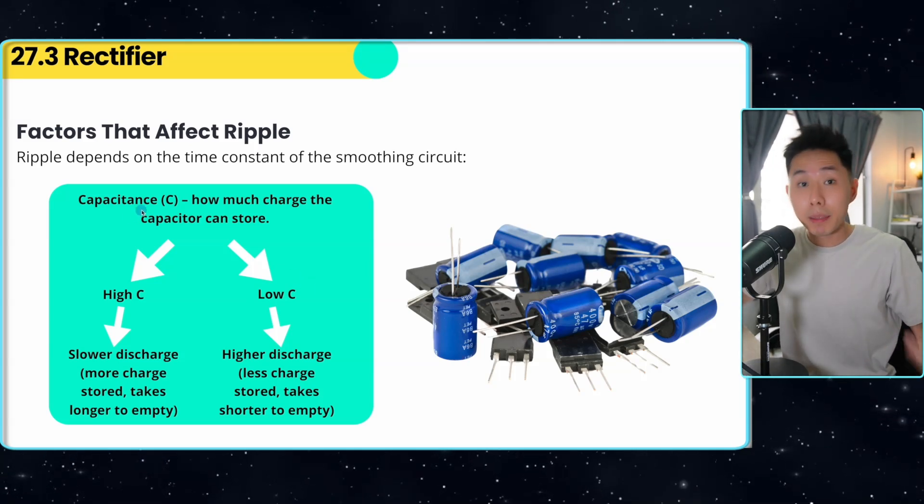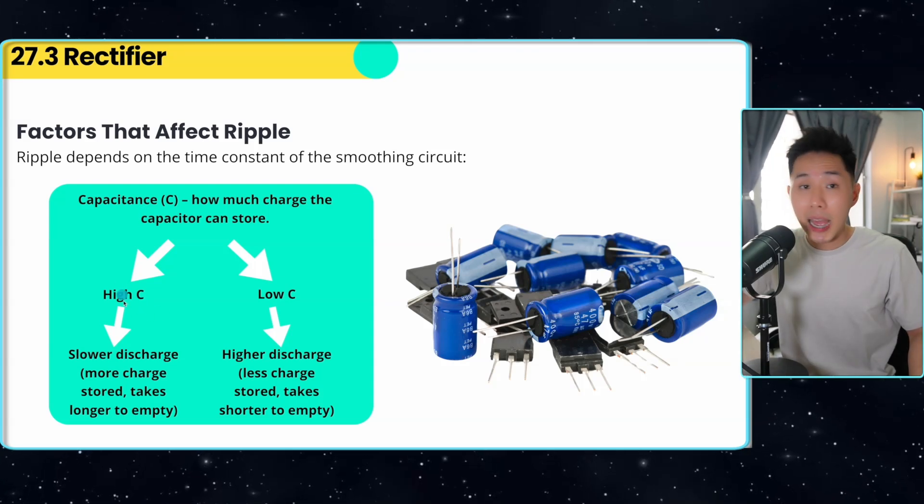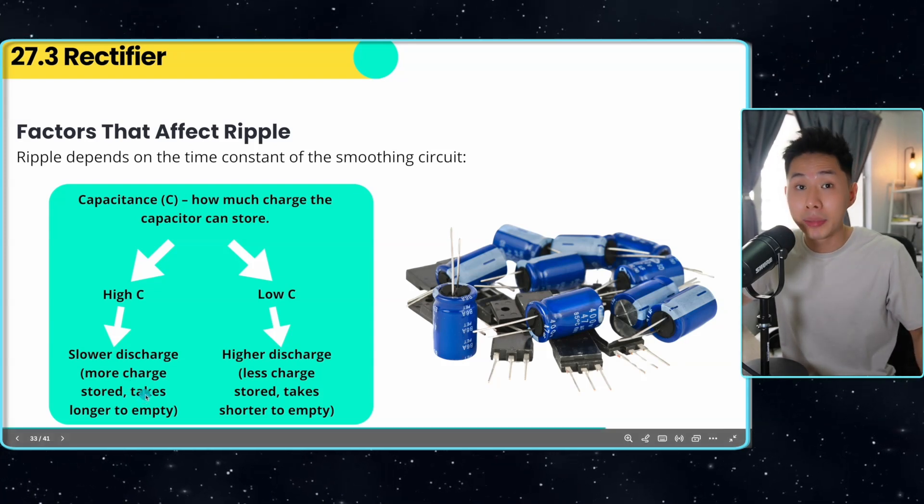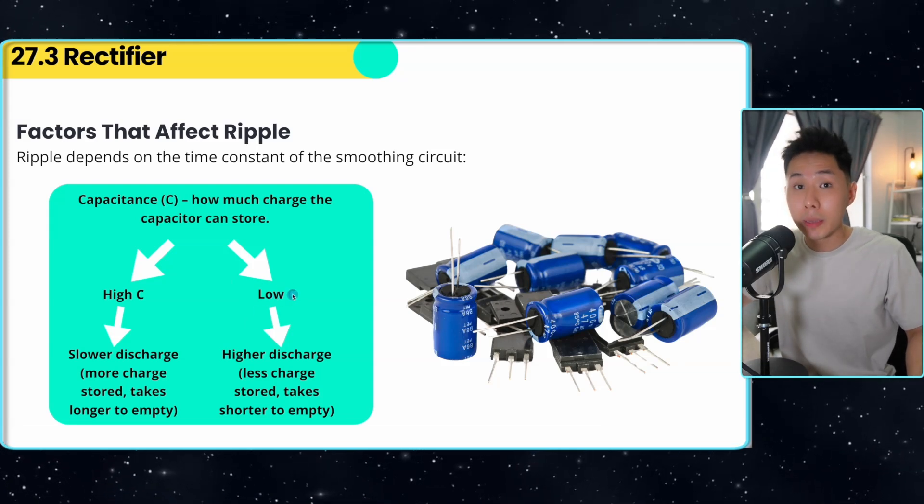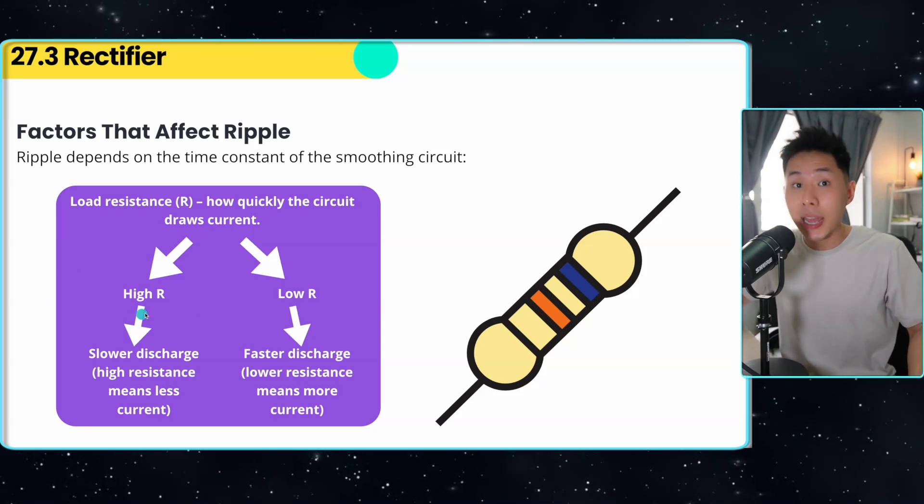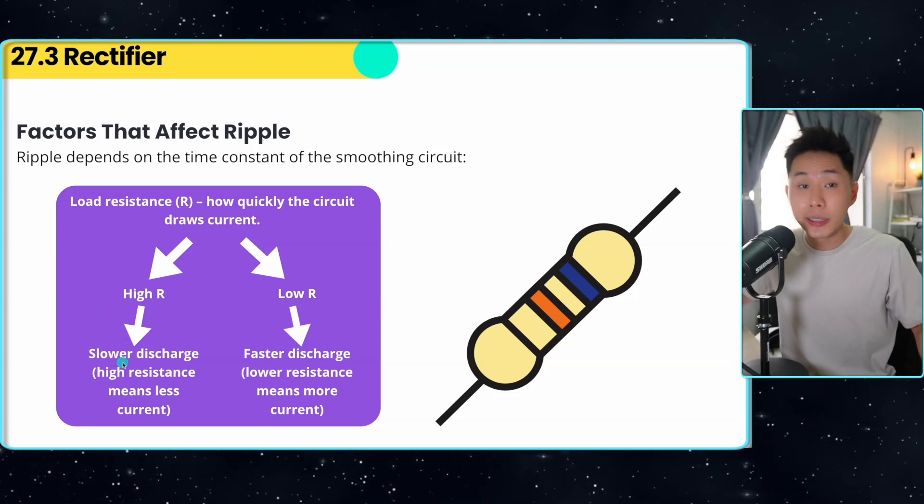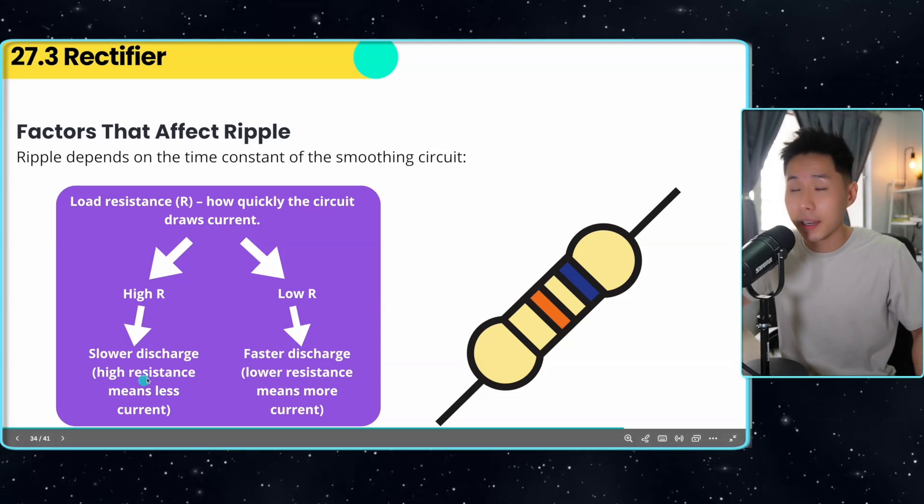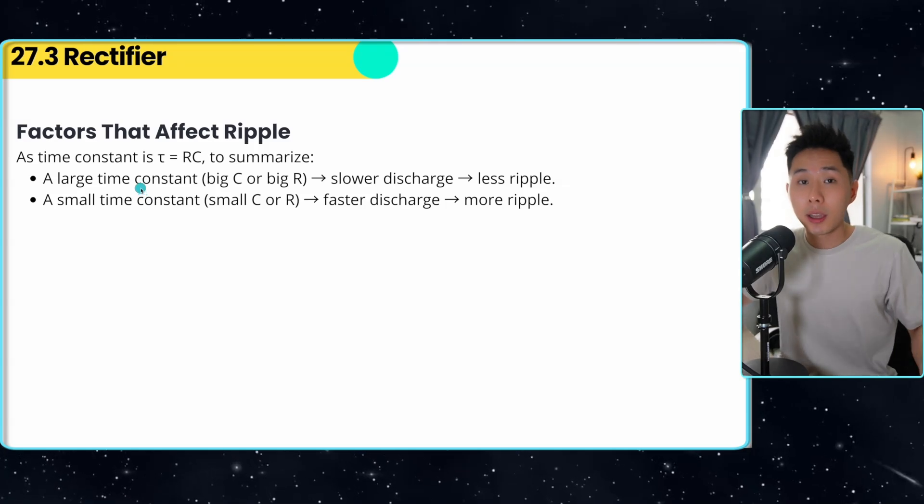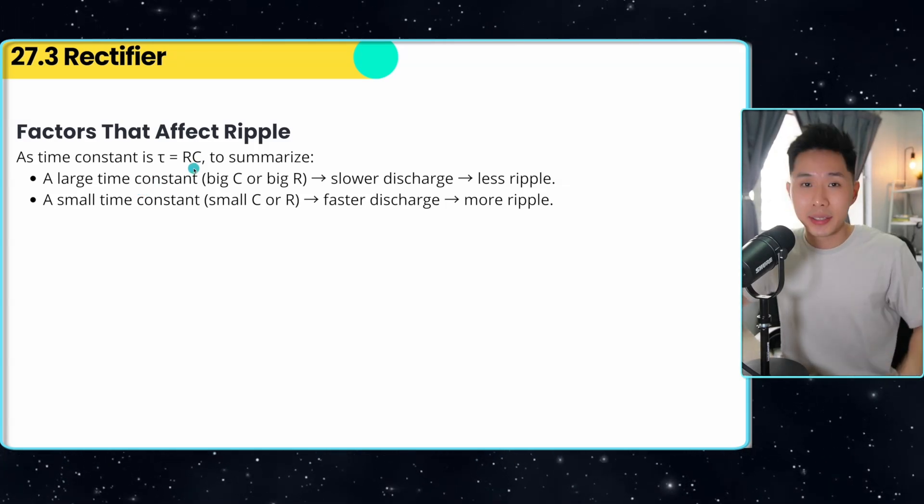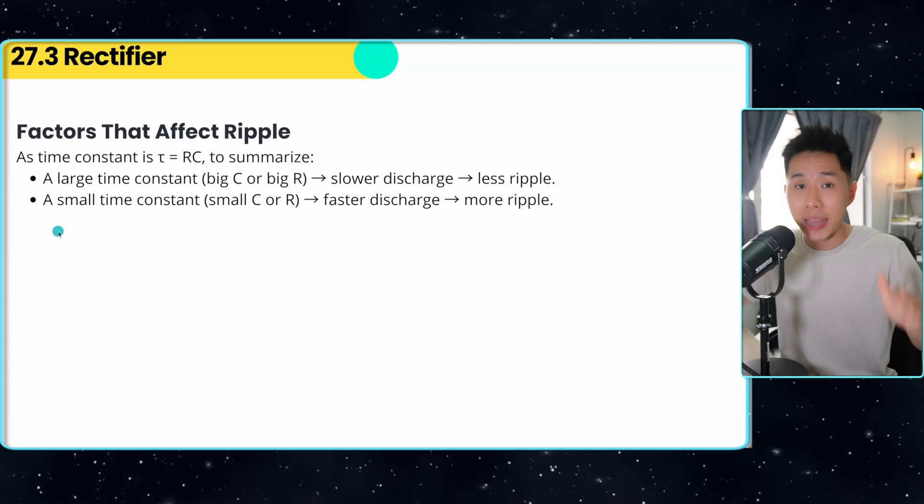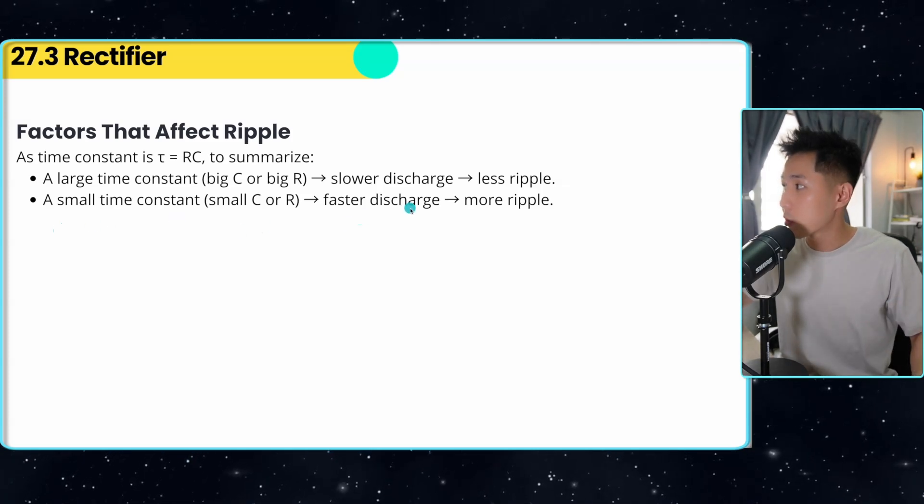There are a few factors that will affect the amount of ripples. First is how big is the capacitance of your capacitor. If your capacitor has a high capacitance, this leads to slower discharge. Because they store more charge, it takes longer time to empty the tank. And if your capacitor has a low capacitance, it discharges faster. Another factor is the resistance. So if your circuit has high resistance, it also leads to slower discharge, because high resistance means less current. And if you have a low resistance, then it leads to faster discharge. The two values here actually contribute to the time constant, which is RC. To summarize, a large time constant leads to slower discharge and less ripples. And a small time constant leads to faster discharge and more ripples.